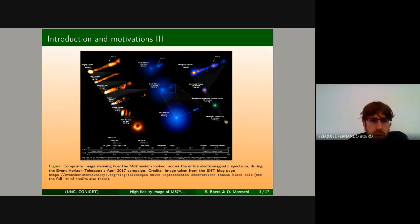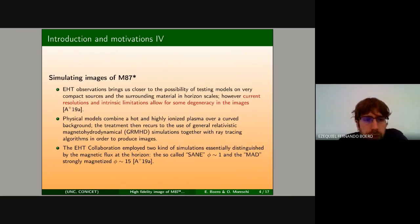It is clear from those images that the recent observations bring us closer to the possibility to test our physical models on horizon scales. However, at the present time the current resolution also allows for some degeneracy in the images. One can play with somewhat different models for emission and the geometry of the accretion disk, and after appropriate blurring of the model one can get quite similar images with many coincidences.